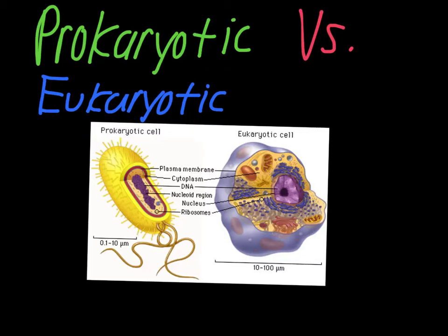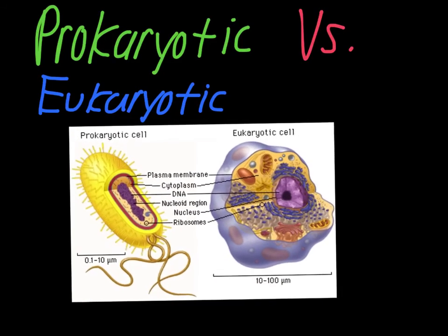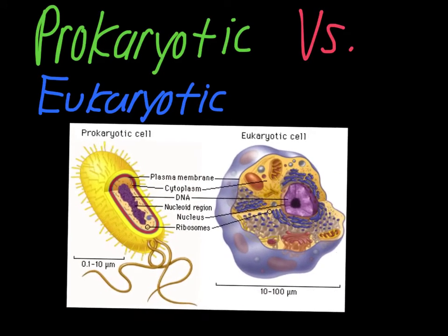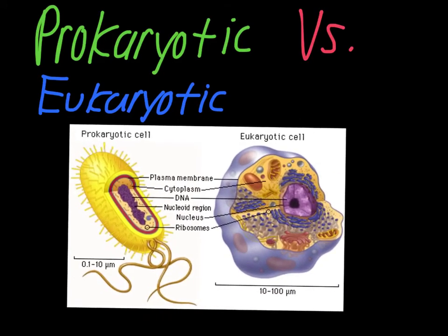To make this kind of simple, eukaryotic cells are a little bit bigger and more complicated. One way I always remember this is that you are made of eukaryotic cells, so eukaryotic cells are much bigger. This is all measured in micrometers — eukaryotic cells are going to be somewhere between 10 and 100 micrometers, whereas prokaryotic cells are going to be much smaller, around 0.1 to 10 micrometers.